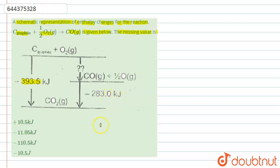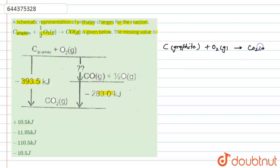According to the question, the reaction proceeds in two ways. First, carbon (graphite) reacts with oxygen gas to form CO₂ gas directly. The enthalpy of formation, delta H, is equal to minus 393.5 kilojoule.